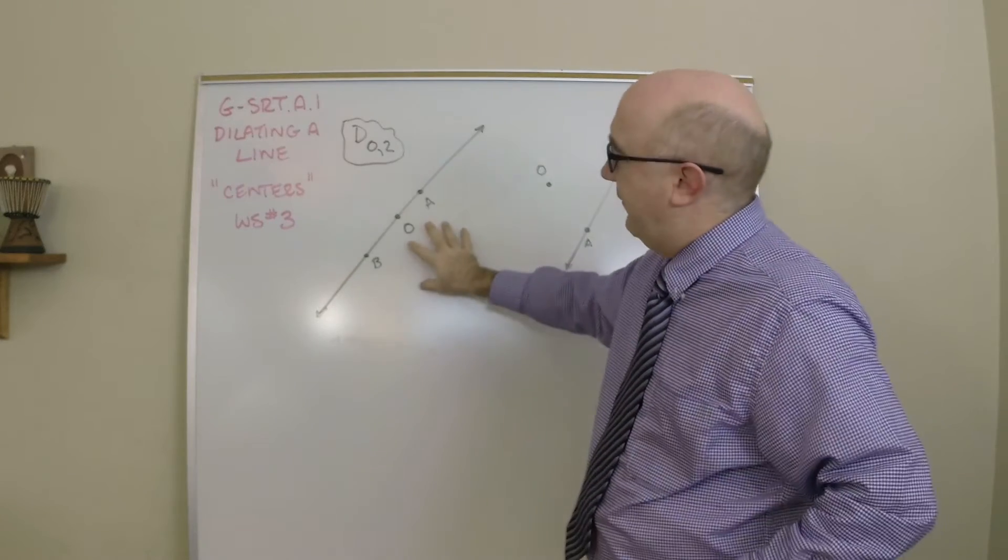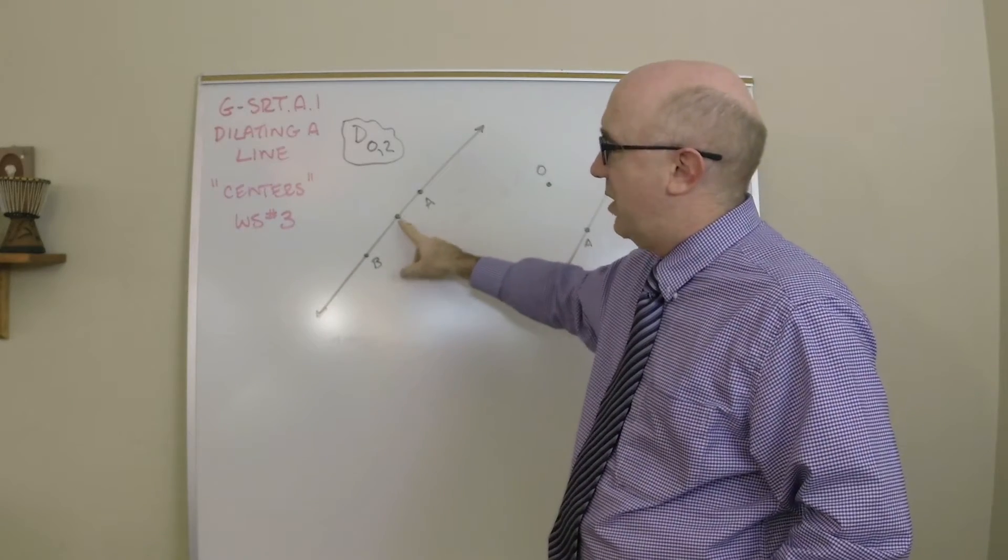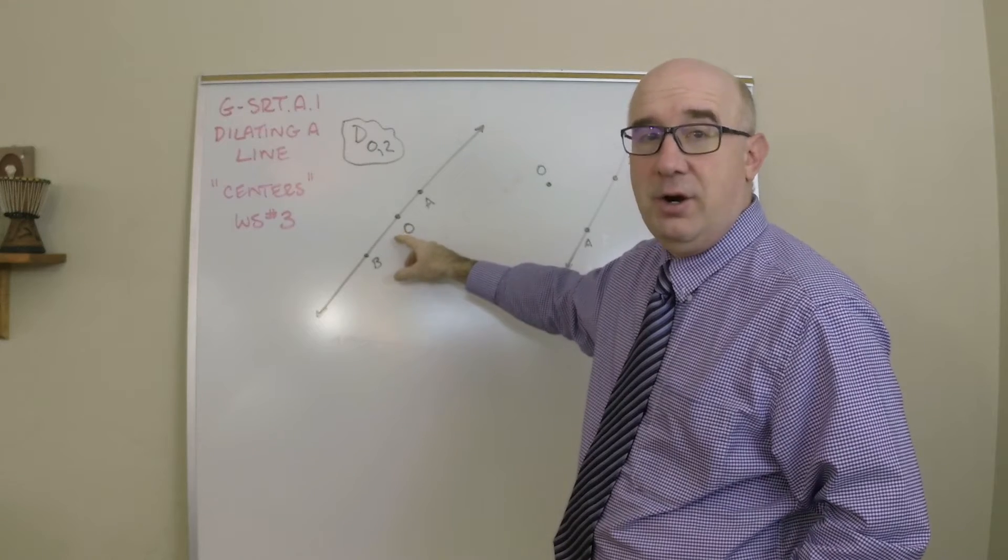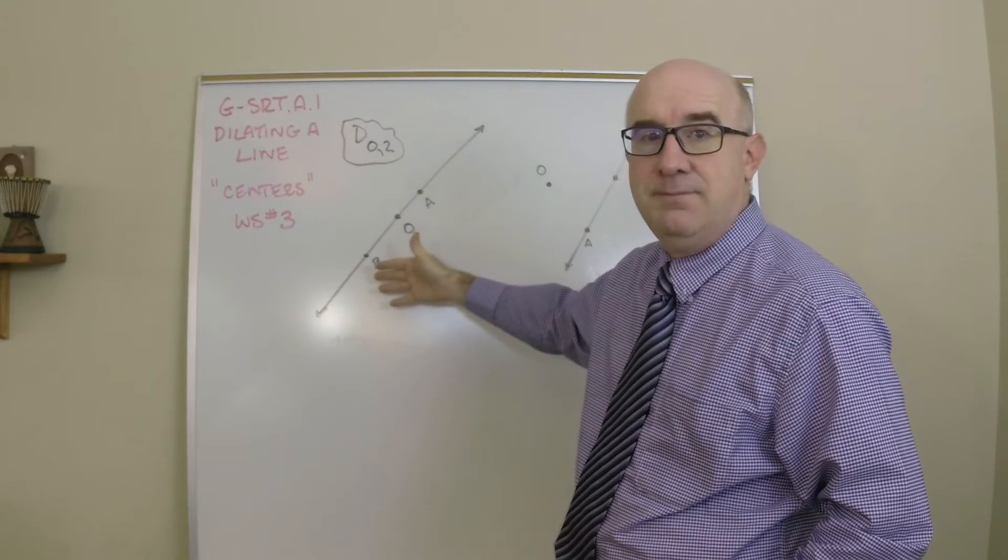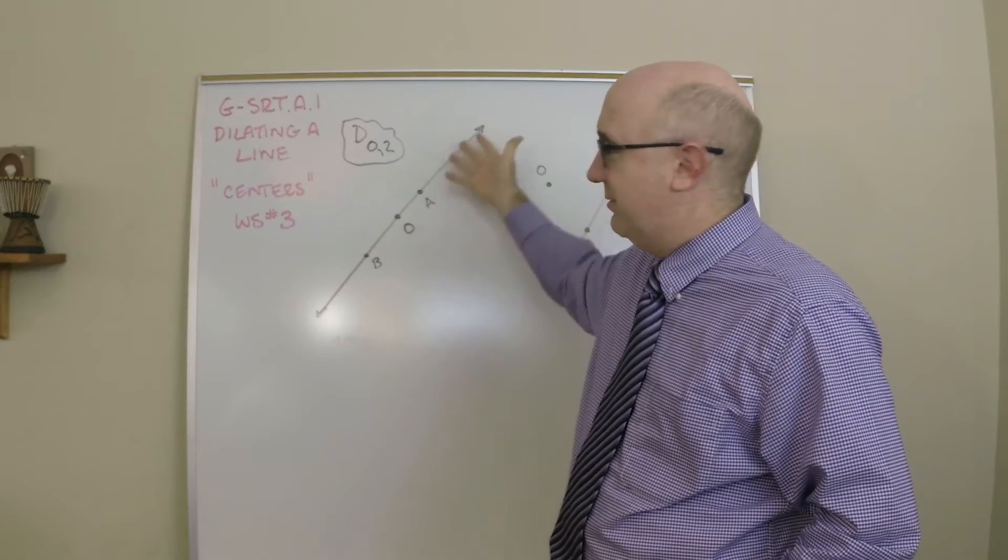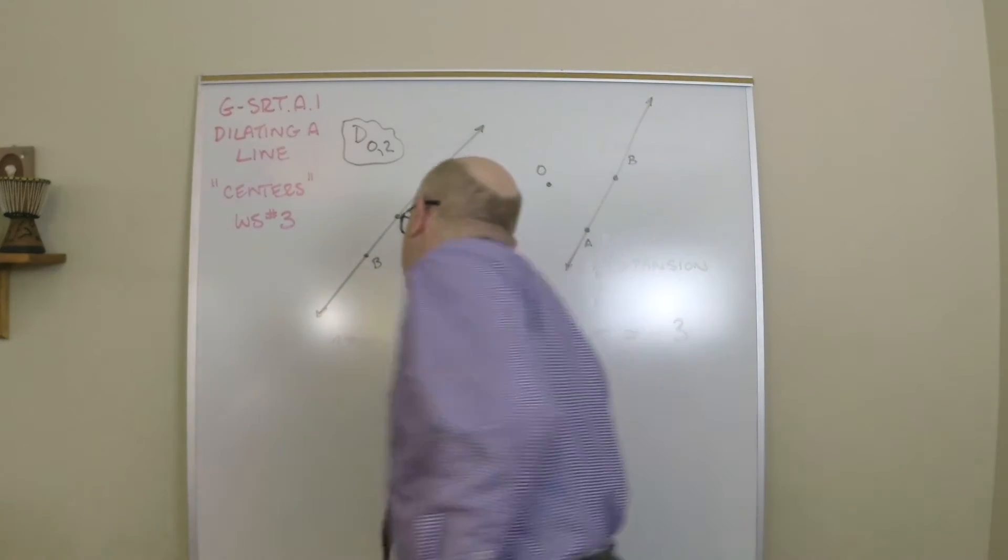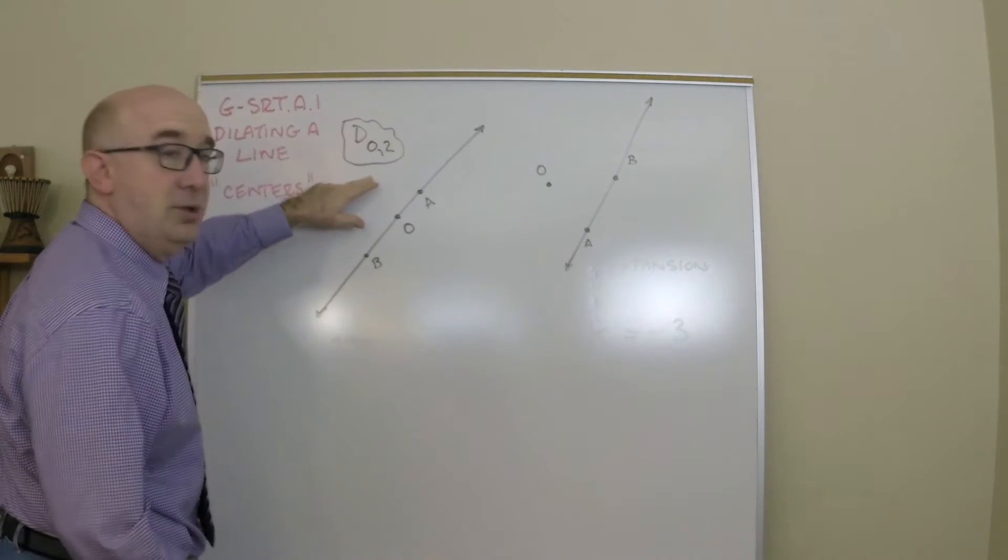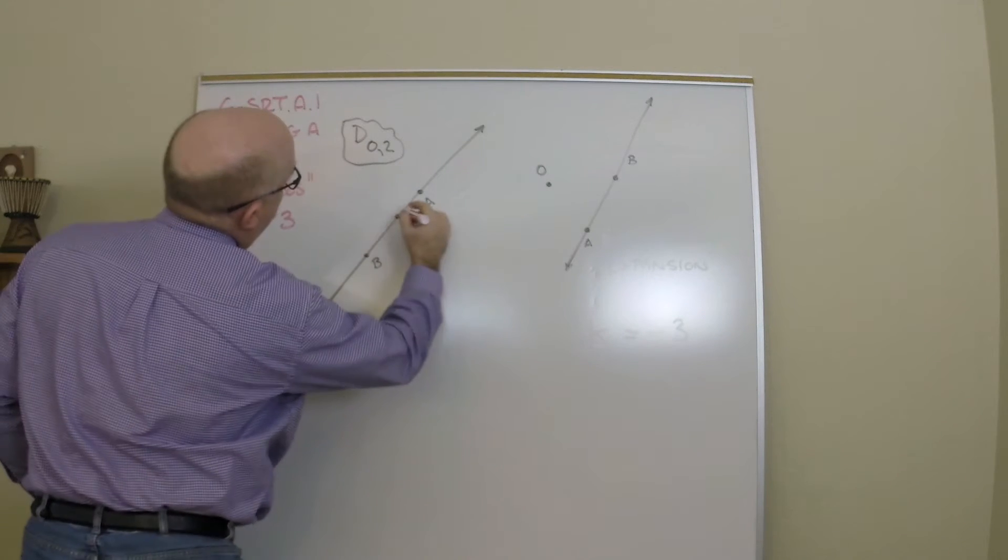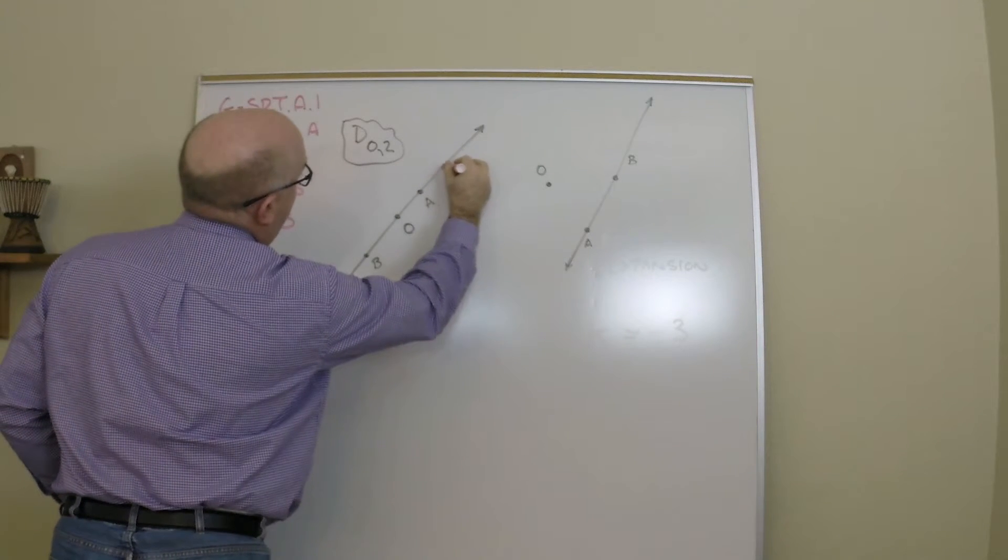So here if we have, notice O is on our line. A and B are on our line. They are rays that form a single line. So if I was to dilate by two here,